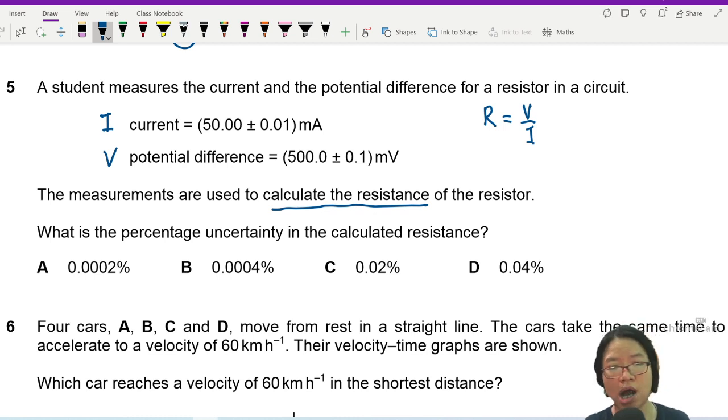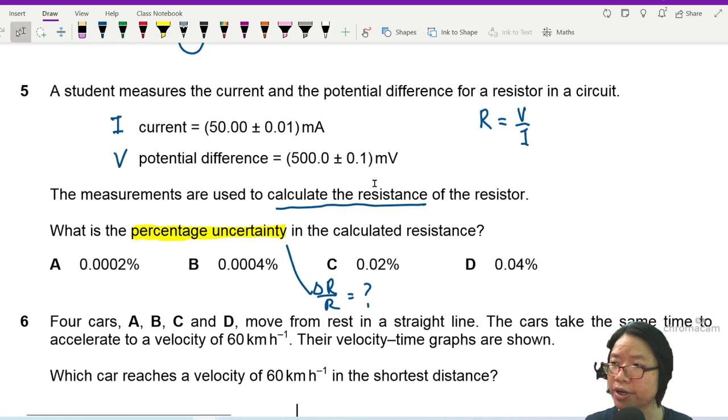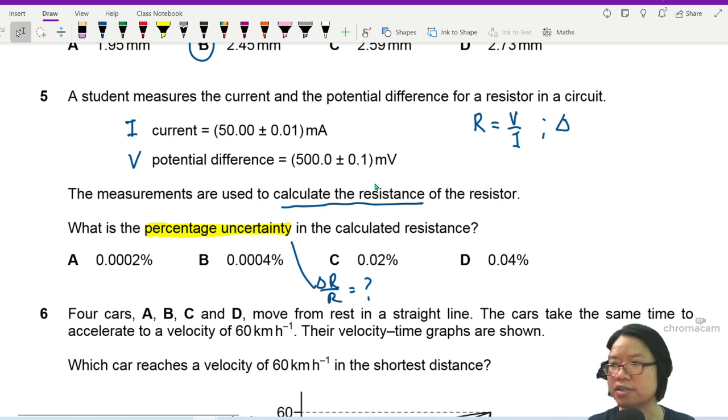So I don't really need to find what the value of R is because the question is asking me for percentage uncertainty. What I'm looking for when it comes to percentage uncertainty is del R over R. So then I look at this equation, and I ask myself, well if I want to find the uncertainty of R, I will take the percentage uncertainty of potential difference plus the percentage uncertainty of current.